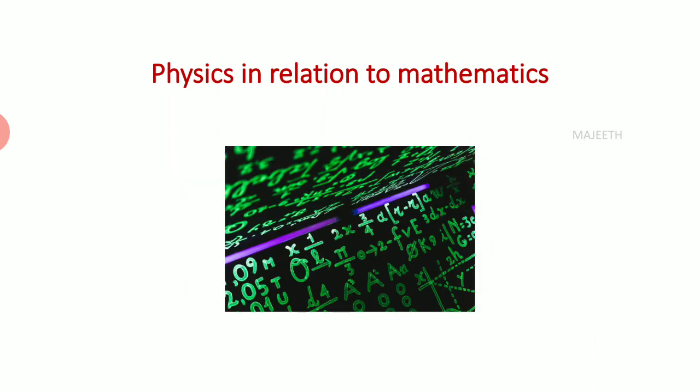Now we see how physics is related to mathematics. Physics is conceptual based science. If you want to extend that or to develop further, we need or to explain physics, we need mathematics. Mathematics is a tool which elaborates so complex concepts of physics with simple way. So mathematics and physics go hand in hand. Without one, other cannot survive. That much relation they have.